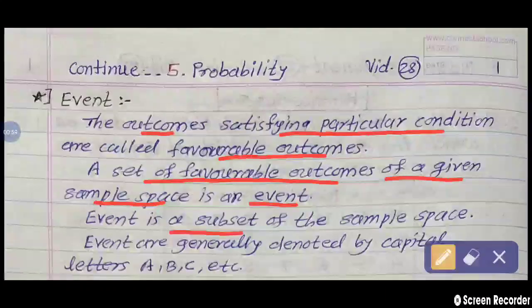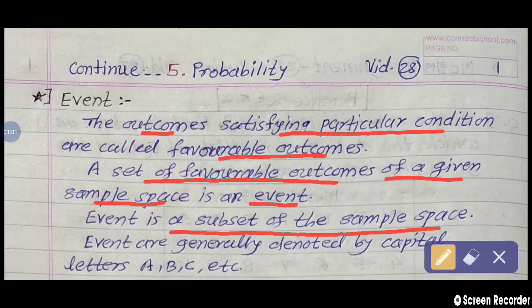Event is a subset of the sample space. It means some points from the sample space are written in the answer of the event, so that the sample points in the event are fewer than the sample points present in the sample space. That is why event is a subset of the sample space.